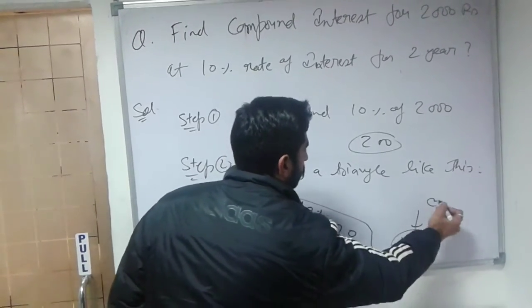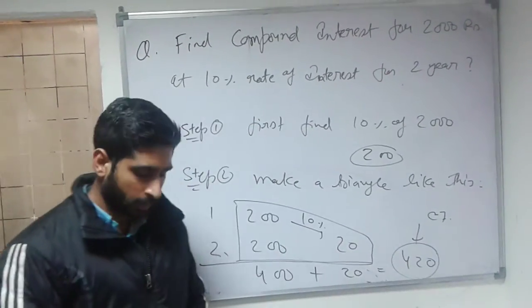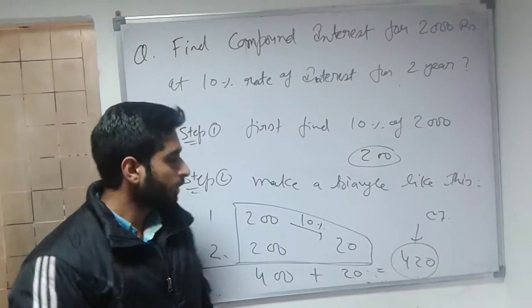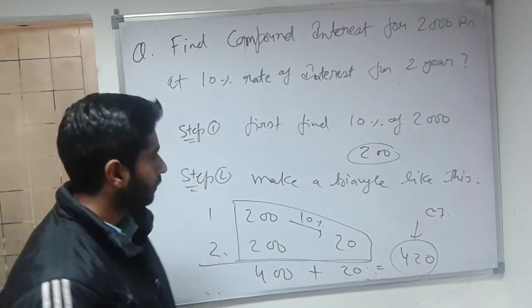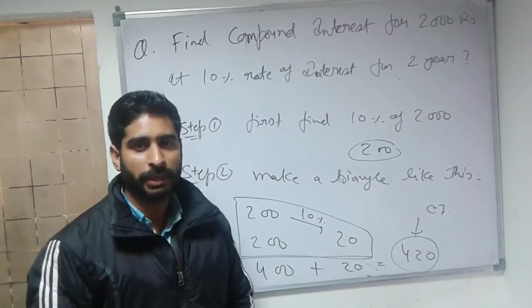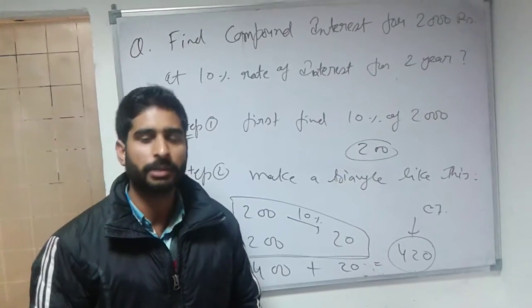So this is your compound interest directly for 2 years without any formula. I think you may like this method to calculate compound interest quickly.